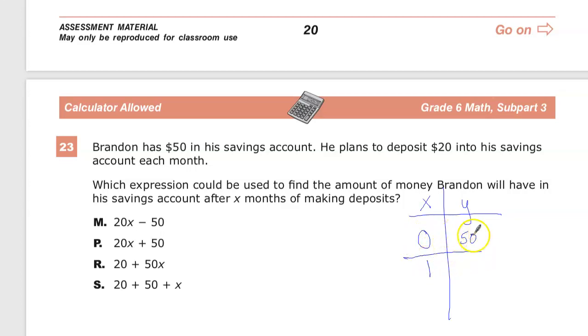After one month, he's going to add $20 and this becomes $70. After that, another $20, $90, and here plus $20, that would be $110.